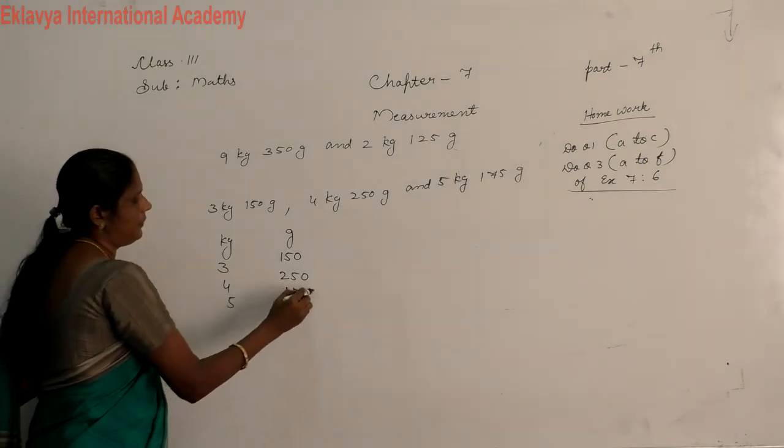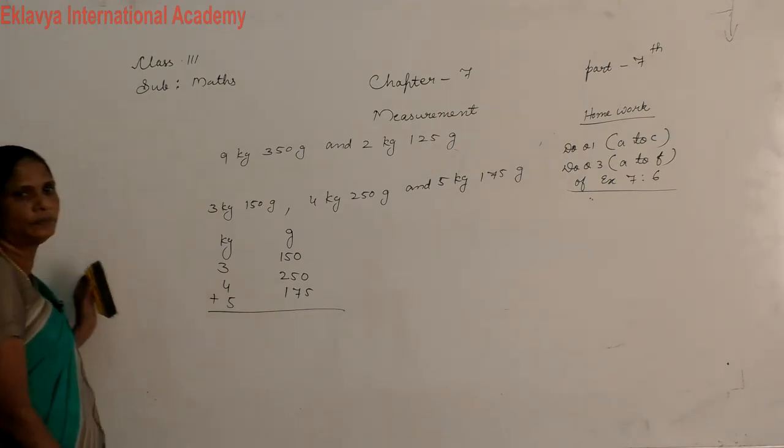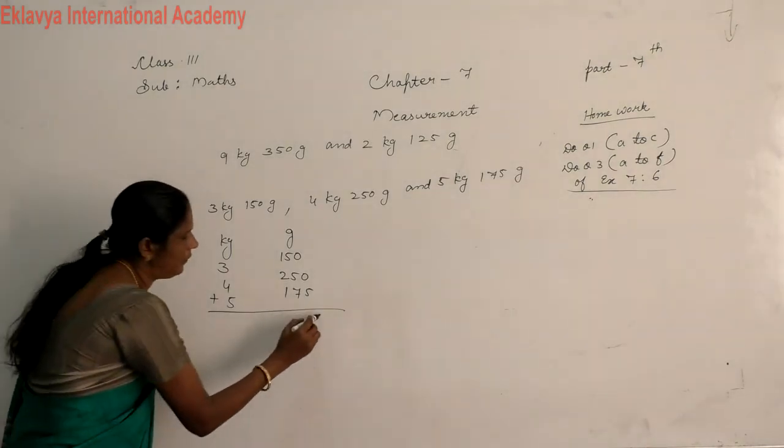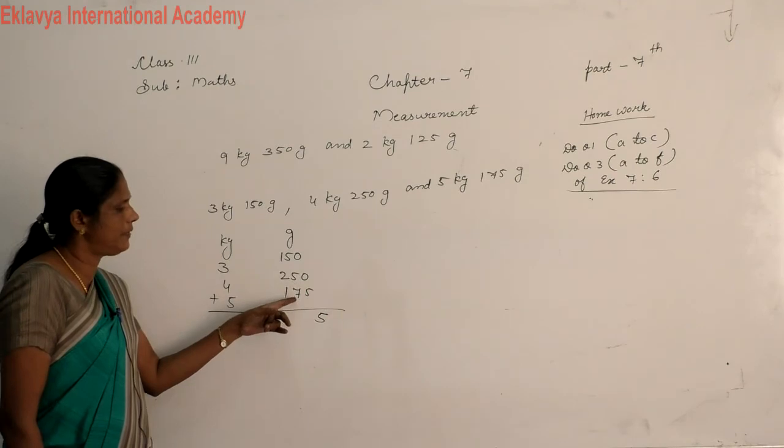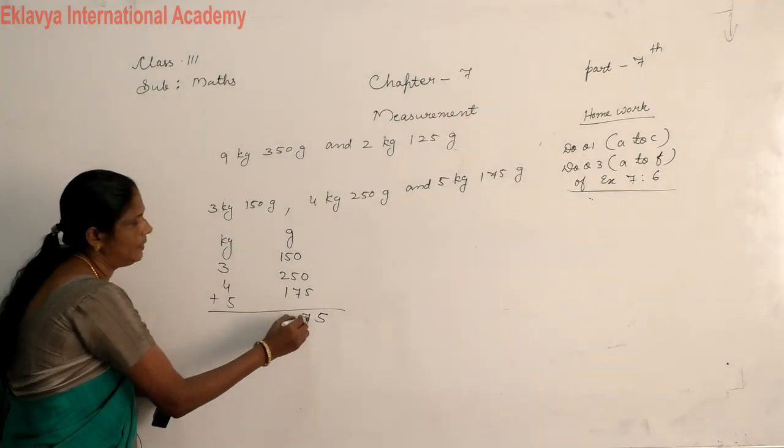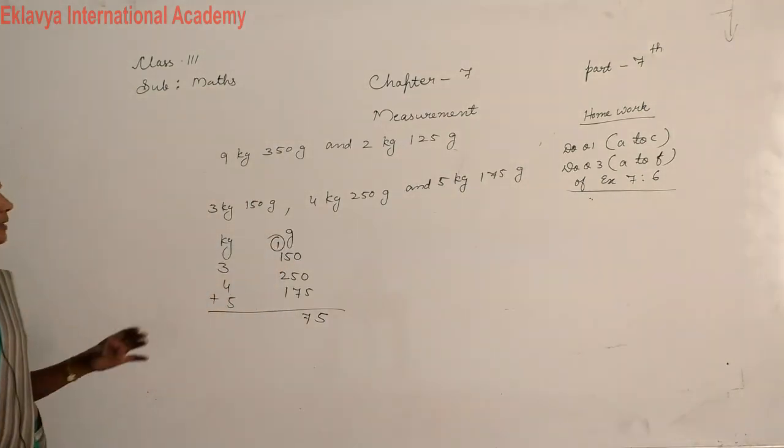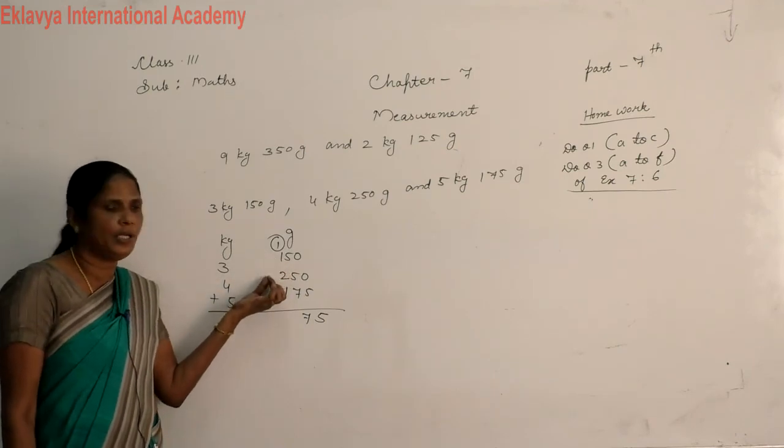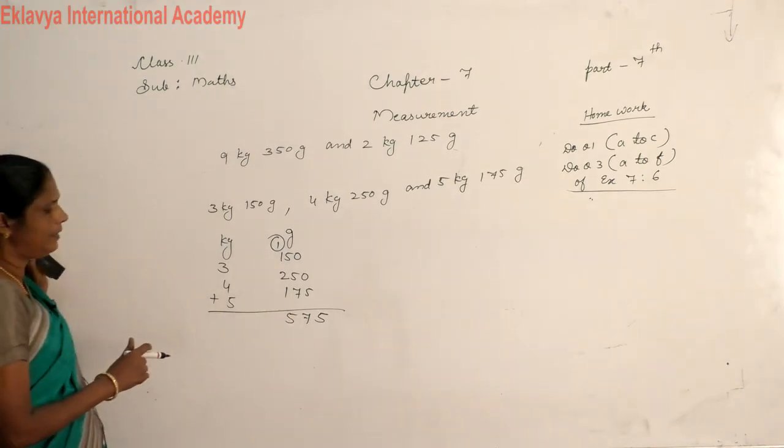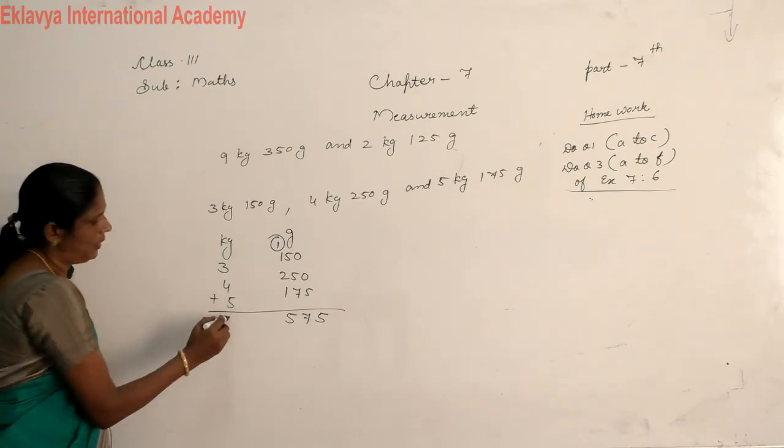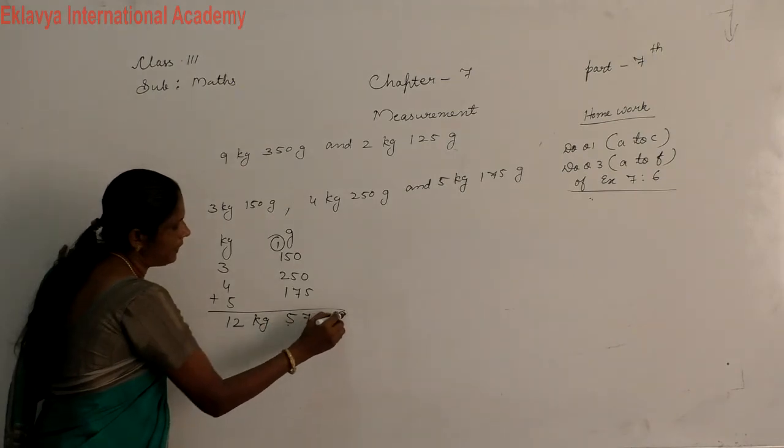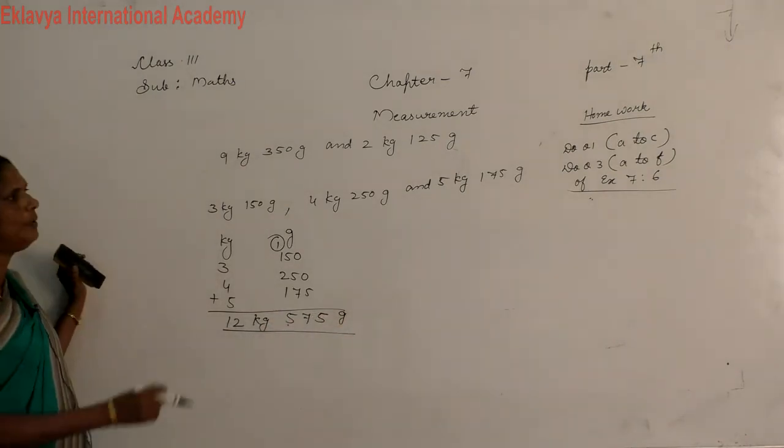Then add this number. 0 plus 0 plus 5 you get 5. 5 plus 5 plus 7, 5 plus 5, 10, 10 plus 7, 17. Then carrying 1 plus 2, 3. 3 plus 1, 4. 4 plus 1, 5. Then here 3 plus 4, 7. 7 plus 5, 12. Answer 12 kg 575 gram. Understand you one more question.